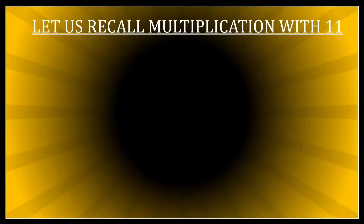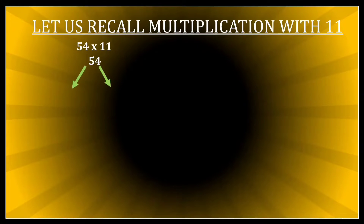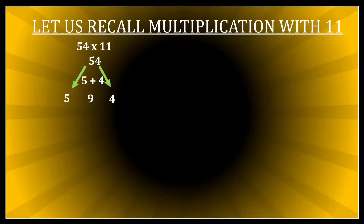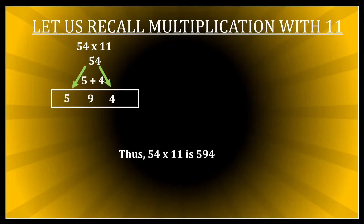It was a very simple procedure. Suppose I wanted to multiply 54 by 11. I took 54 — it has two digits, 5 and 4. They were written, and in between 5 and 4 I wrote the sum of 5 and 4, that is 9. So I got the answer that 54 into 11 is 594.